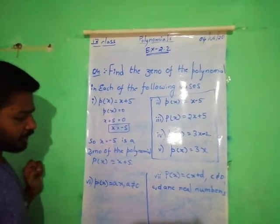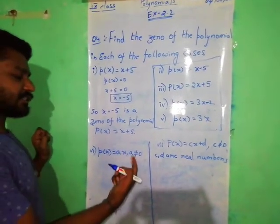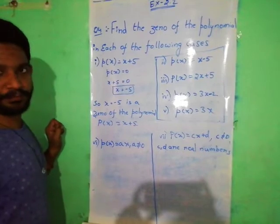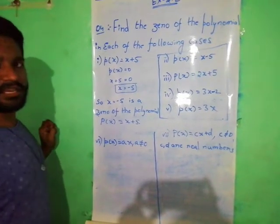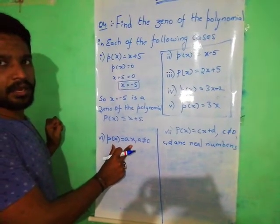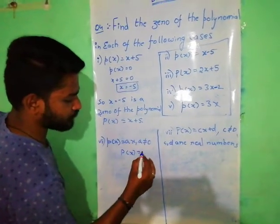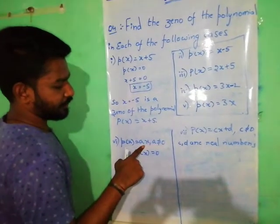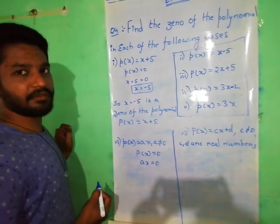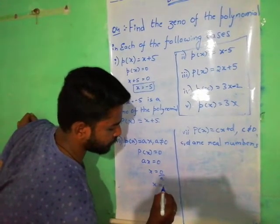Coming to the sixth question: P of x is equal to Ax, where A is not equal to 0. Why is A not equal to 0 mentioned? If A becomes 0, the given polynomial becomes 0. By solving method, P of x is equal to 0, so Ax is equal to 0. We have to find the x value, so x is equal to 0 divided by A, giving x is equal to 0.